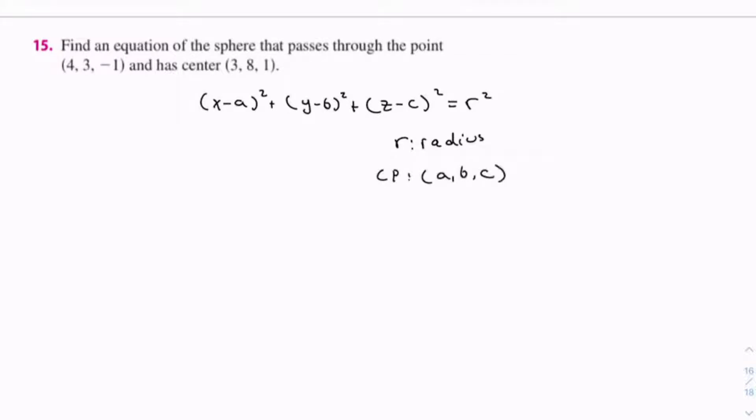We have the center point, which is (3, 8, 1). So we already have a, b, and c: a = 3, b = 8, and c = 1.